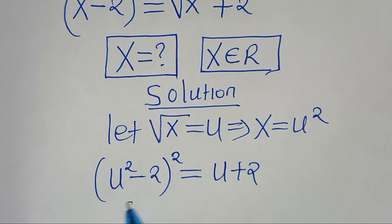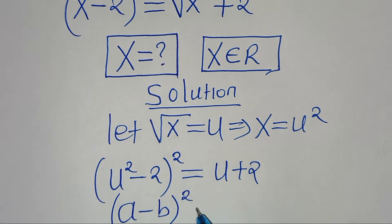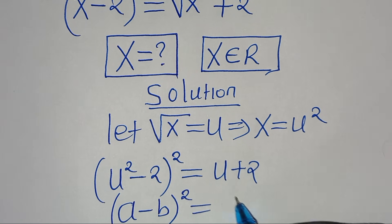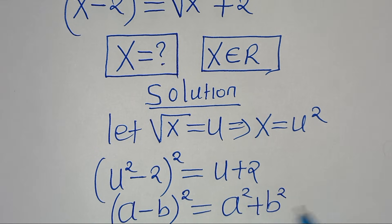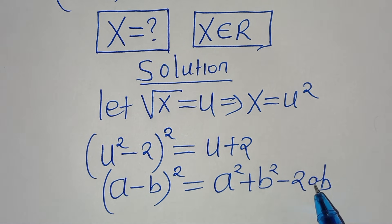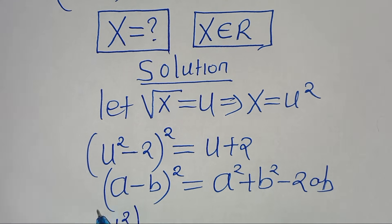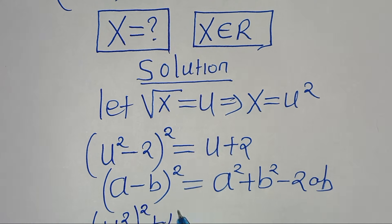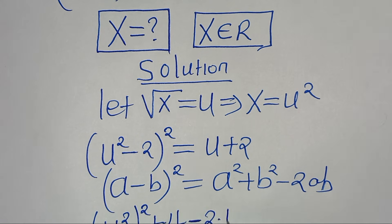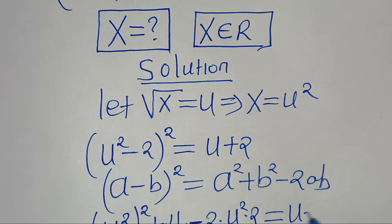So we have (u squared minus 2) to the power of 2. This is in the form of (a minus b) raised to the power of 2, which can be expressed as a squared plus b squared minus 2ab. Applying this algebraic identity, here we have u squared to the power of 2, plus 2 squared which is 4, then minus 2 times u squared times 2, this is equal to u plus 2.